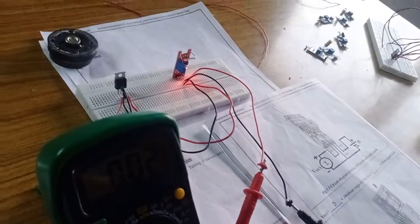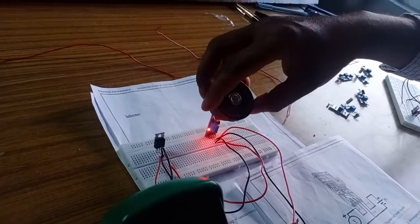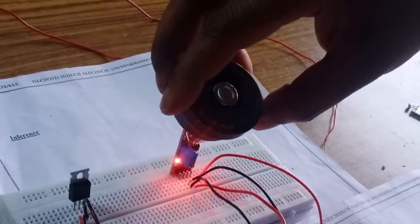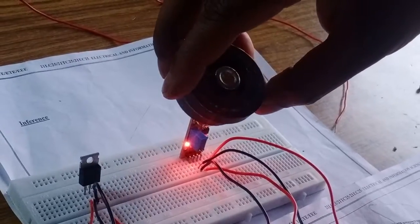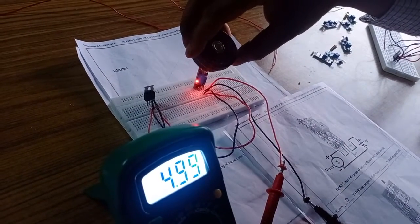Now I am going to bring the magnet nearby to the reed sensor. Listen, the moment I bring the magnetic sensor nearby, we are getting the output as logic high, five volt.